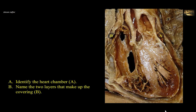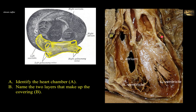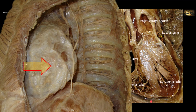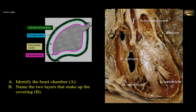Identify heart chamber A and name the two layers that make up covering B. This is a longitudinal section of the heart showing the right atrium, right ventricle, and left ventricle — the thickest chamber. The left atrium forms the posterior chamber of the heart and is not sectioned in this cut, but its auricular appendage can be seen at A, located on the left border of the heart between the left ventricle and the pulmonary trunk — so A is the left auricular appendage. The heart is surrounded by the pericardial sac. This pericardium not only surrounds the heart, but also extends to the beginning of the great vessels. The pericardium consists of two layers: a strong outer fibrous layer, which is one of the layers represented in B.